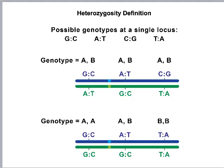A SNP is a single nucleotide polymorphism. For example, if we look at a particular locus, we can either have a GC base pair or an AT base pair at the same locus, and we call that a single nucleotide polymorphism.